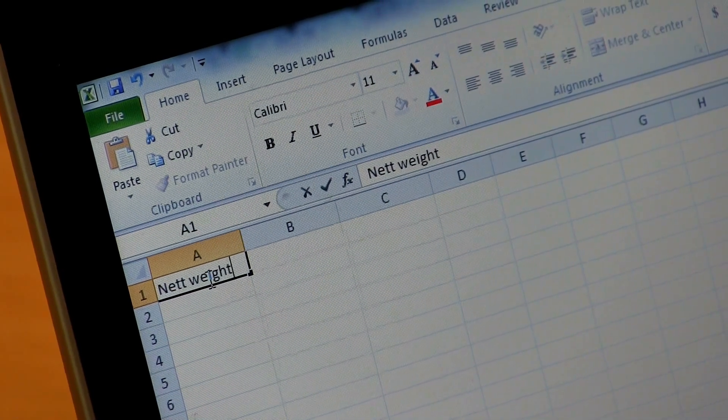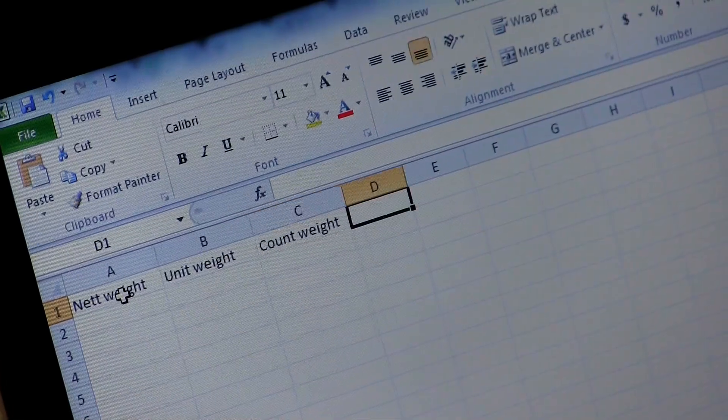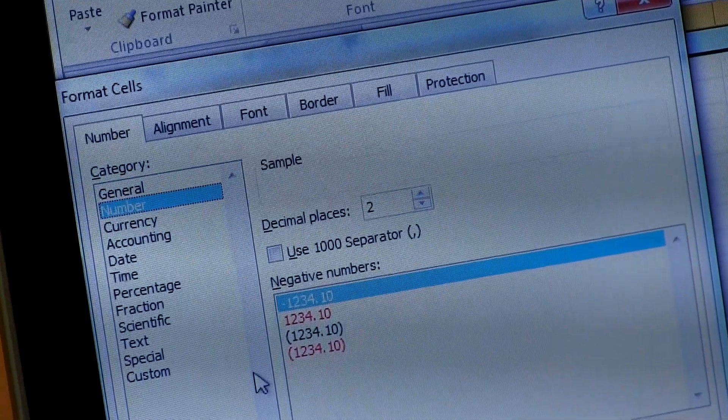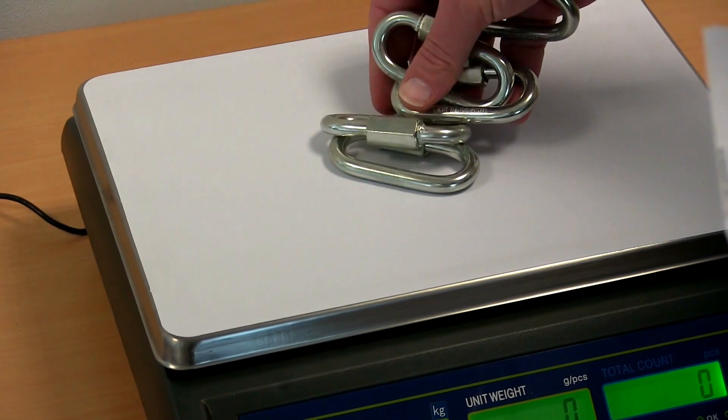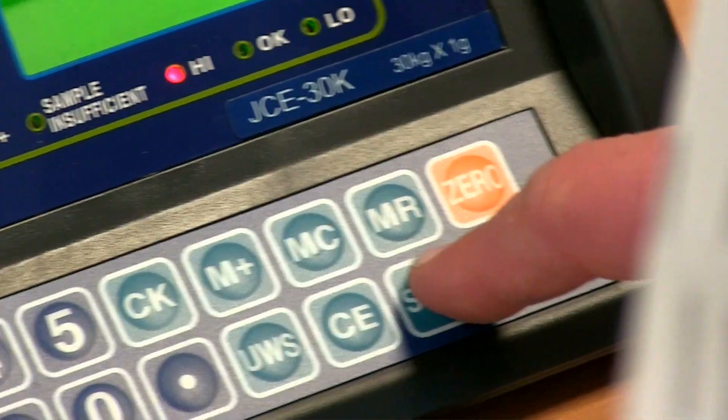Before weighing, the spreadsheet needs to be set up with three columns: weight, piece weight and count. You'll need to format the cells so they match the number format on the display. To count, add a sample to the scale, type in the number of items in the sample and press sample.